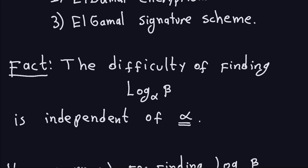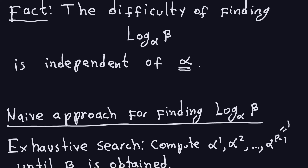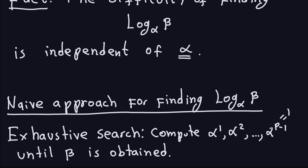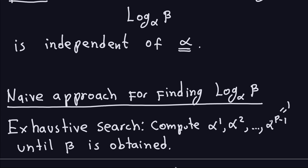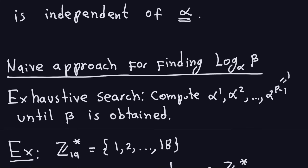What would be the naive approach to computing this discrete log? Somebody gives you the prime P, the generator alpha, and beta — any number between 1 and P minus 1. The naive approach is exhaustive search: just start taking powers of the generator until you get beta. Once you get beta, that exponent is the discrete log.